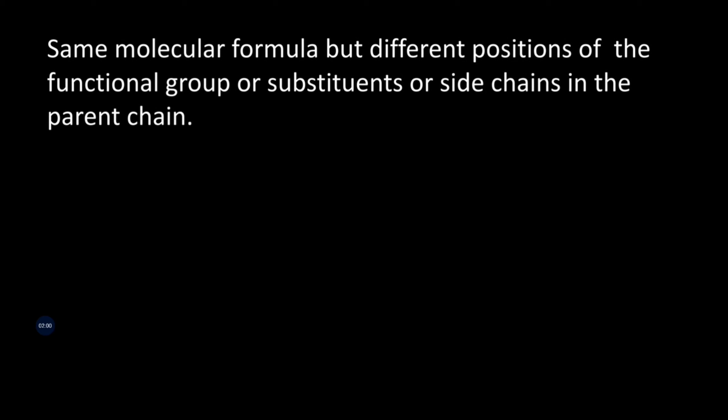Suppose we have a 4 carbon skeleton parent chain like this. And then along one of the carbons, we have a Br molecule which is a substituent.